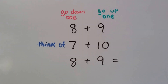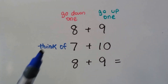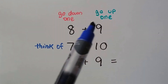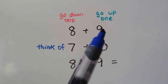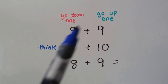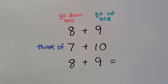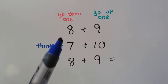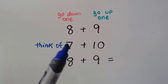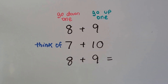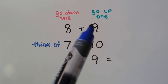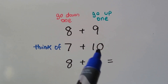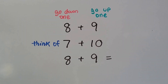We have 8 plus 9. Now we have to be careful because the 9 is in the second spot. It's the same thing — it doesn't matter what order we add them. This 9 is going to go up to 10, this 8 is going to go down to 7. See, it's giving 1 of its counters to the 9 to make a 10, so it becomes a 7.